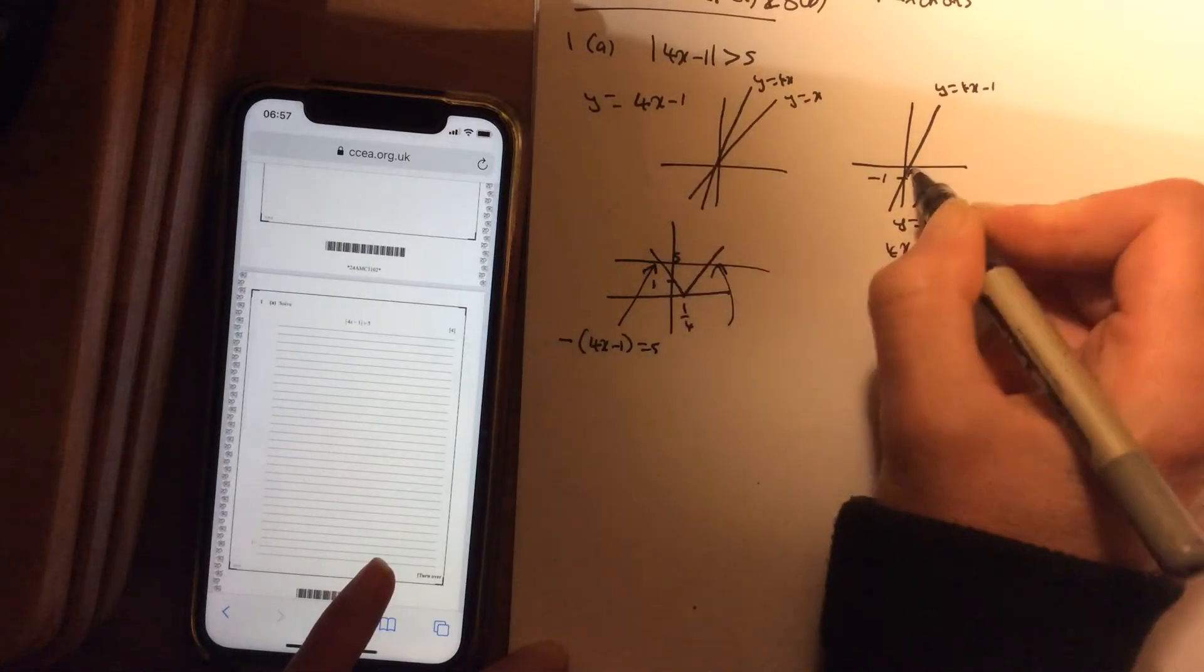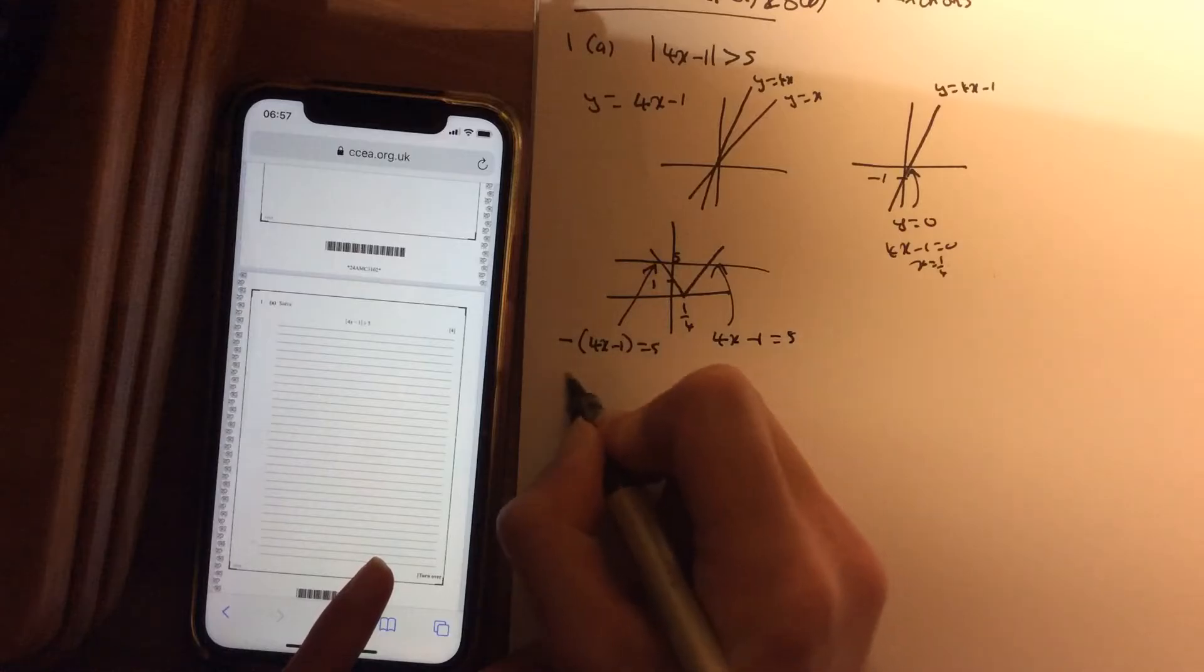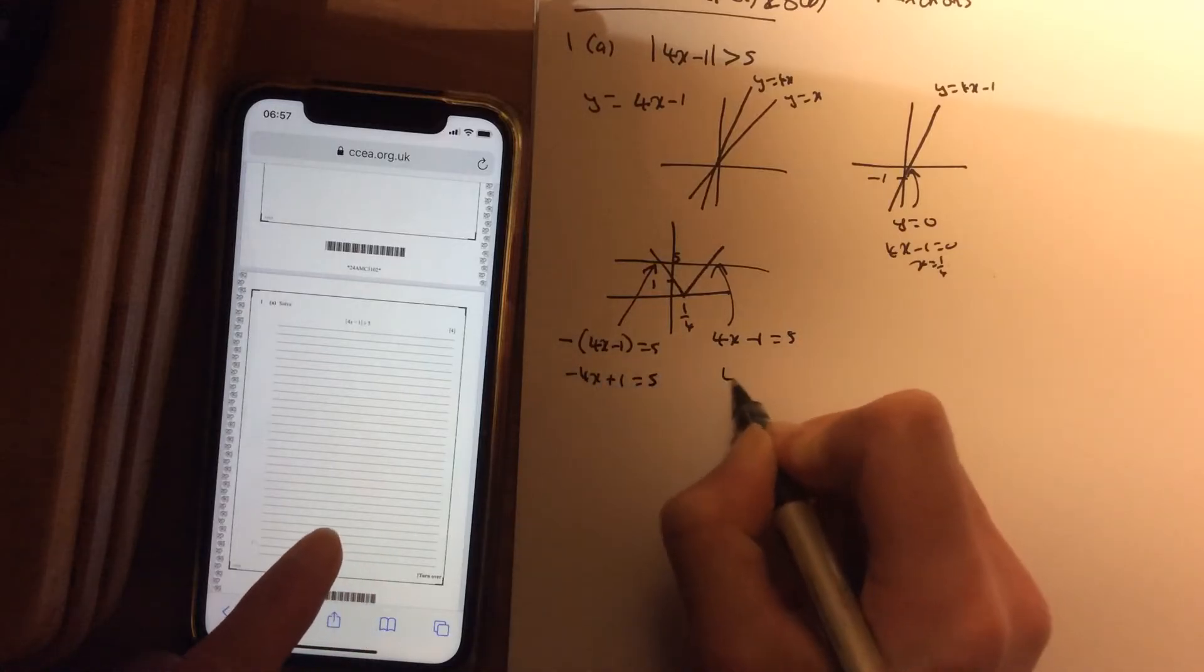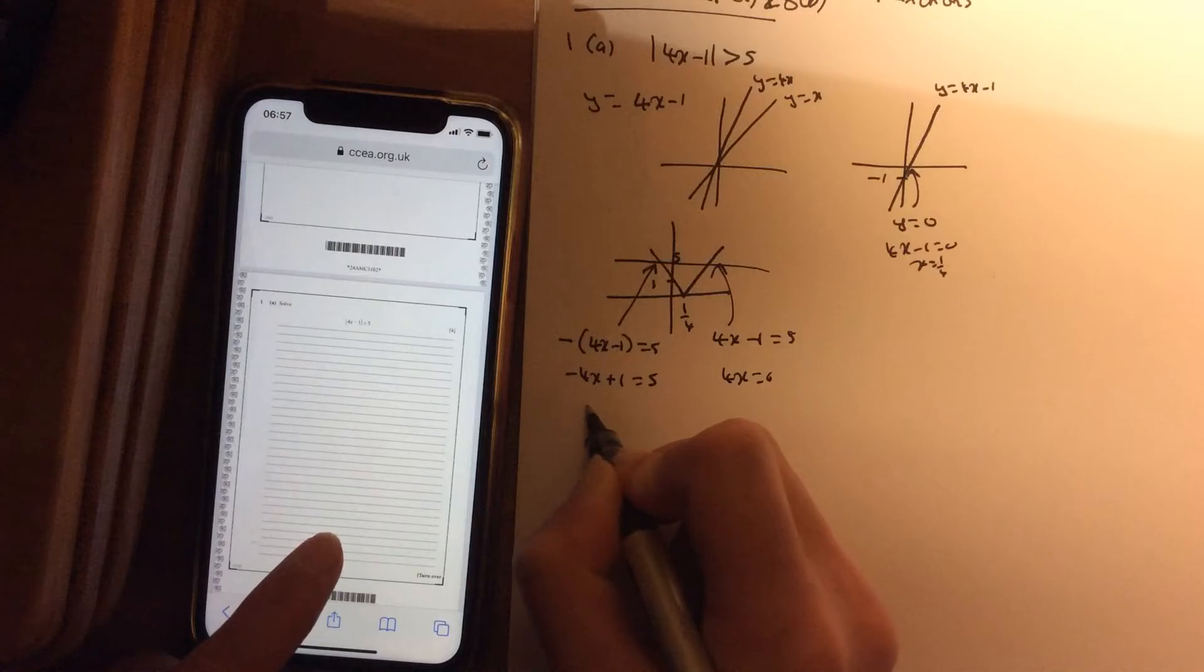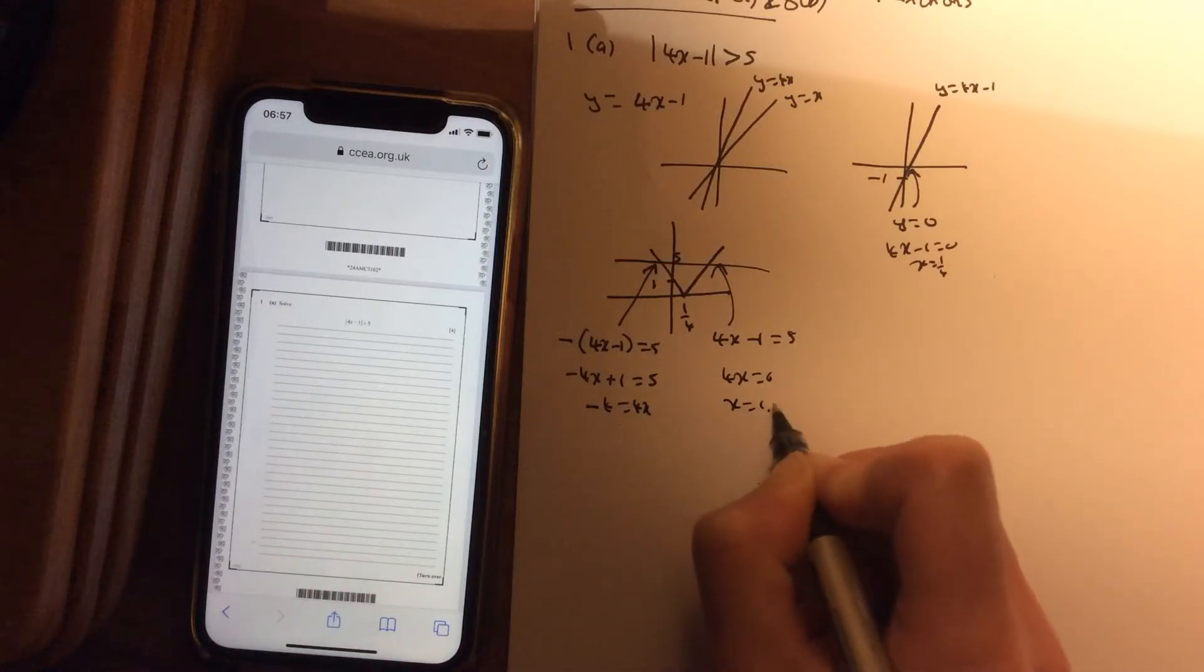This side was always positive in the original graph, so whenever you are removing the modulus, just keep it positive. So -4x + 1 = 5. 4x equals 6. So rearranging that. Minus 4 is 4x. x is 1.5.